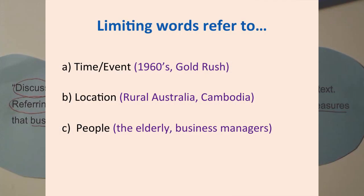Finally, we need to bracket the limiting words. These words limit the scope of your research and discussion. They are also key words, but by identifying them separately it can help you to be clear about the kinds of resources you may need to find when researching. They refer to population, place, and time.